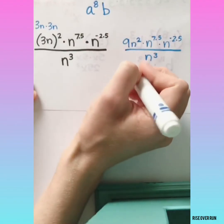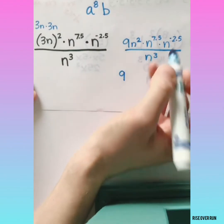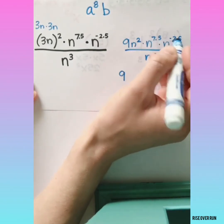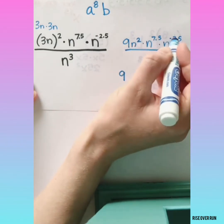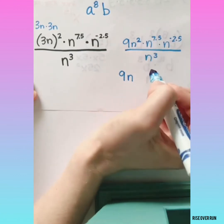Then let's bring everything else over. Okay, we only have one coefficient. Let's go ahead and bring that down, the 9. Just looking in the numerator here, we have 3 different n's with different exponents. So we can use product rule. We're going to add these exponents together, 2 plus 7.5 is 9.5.